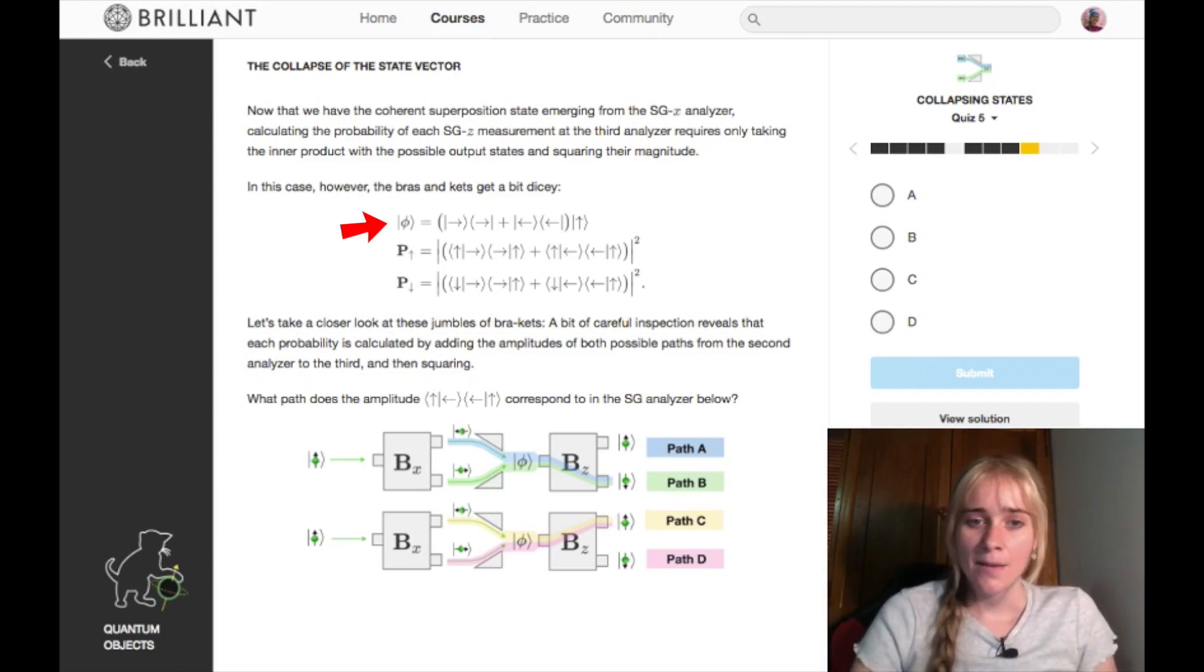So in this case, this is our superposition here and that's what we've learned to represent. It's the sum of these outer products with our essentially our input state. So that's what it started as - it was spin up - and now we've got this superposition here with that. To get the probability, we'll take the inner product of this superposition with either spin up or spin down. So a question here just to make sure we're on the right track: what path does this amplitude correspond to in the analyzer below?